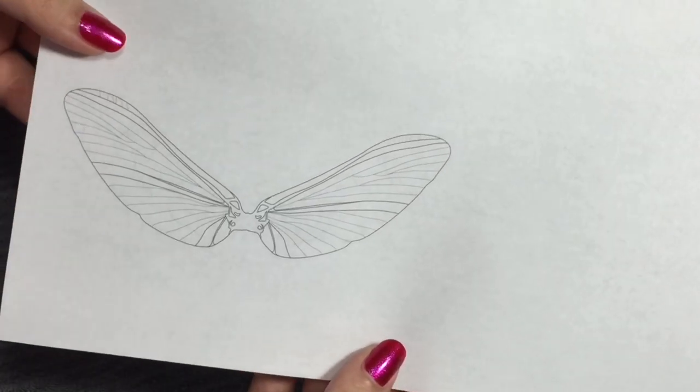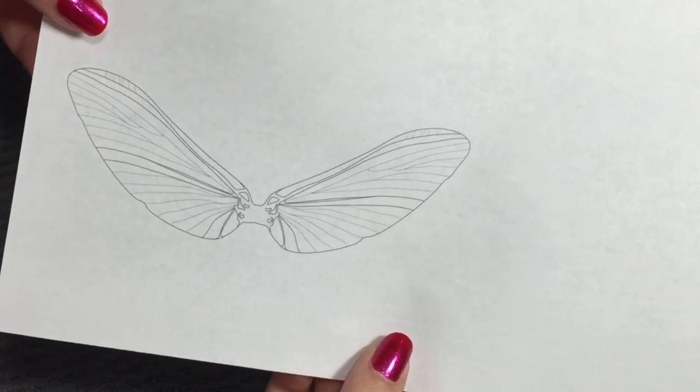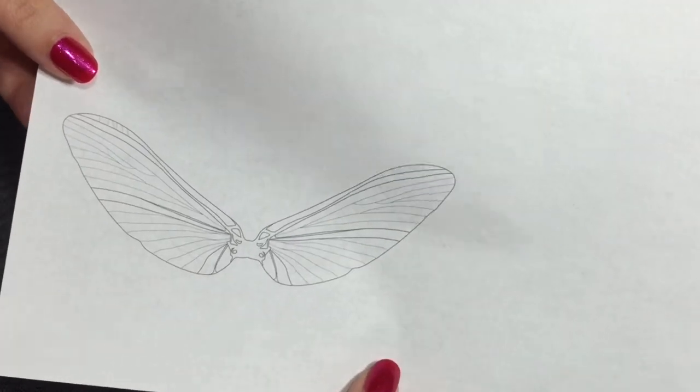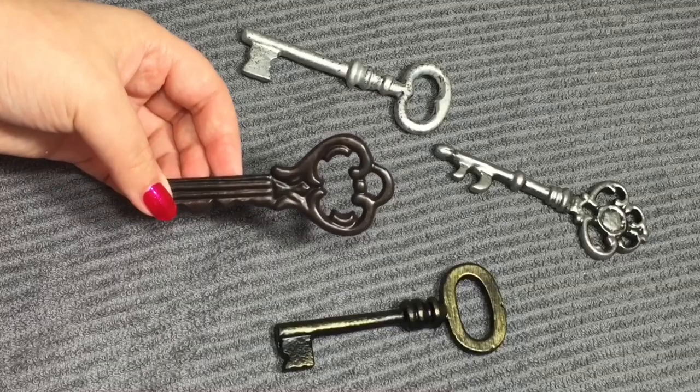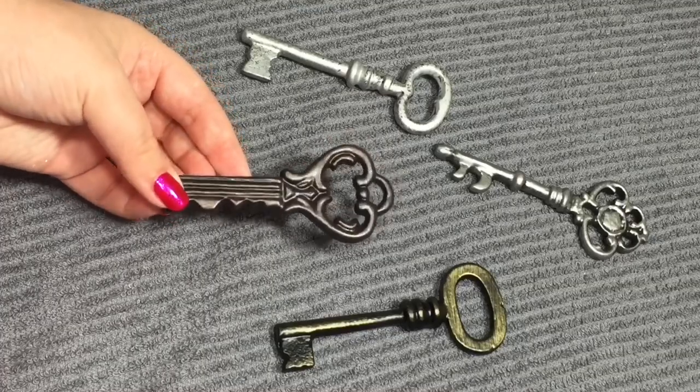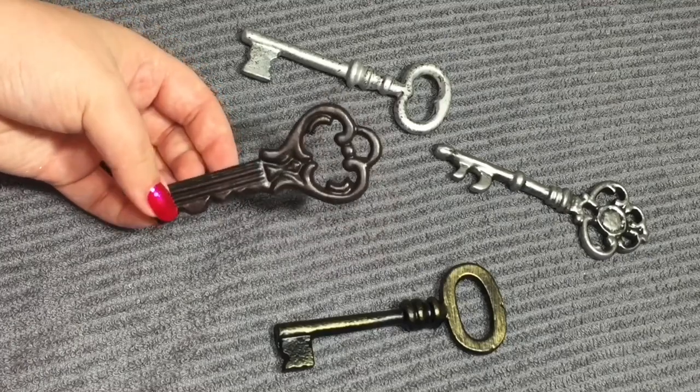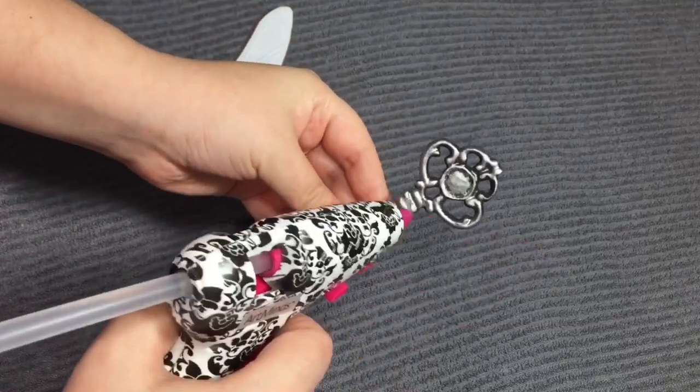First, you're going to print out some wings. I found this wing template online and I'll leave a link to it down below in the description box. You'll also need some keys, whether they're real or fake. I got these fake ones at Michael's. You can find these at most craft stores or maybe Amazon. I'll leave a link or more if I find it online.